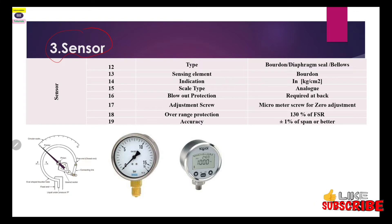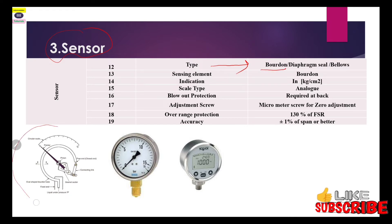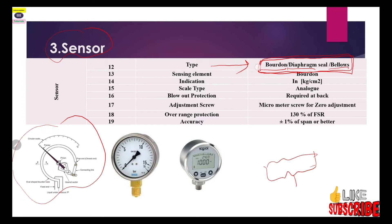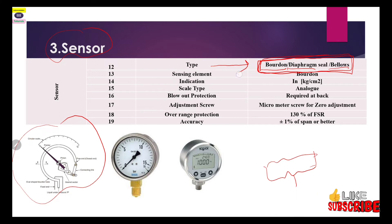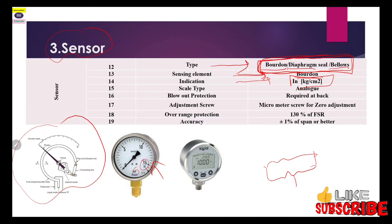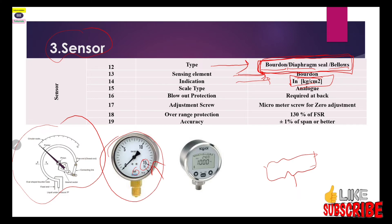The third section is sensor-related specifications. The type of sensor may be Bourdon tube, diaphragm type, or bellows type — these are the three general types of pressure gauge sensors. Here we are talking about the Bourdon tube, so the sensing element is Bourdon tube. Indication units — you specify in which unit you want your pressure gauge scale to display.